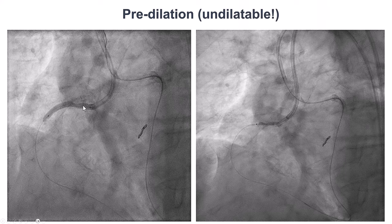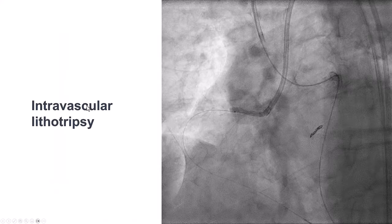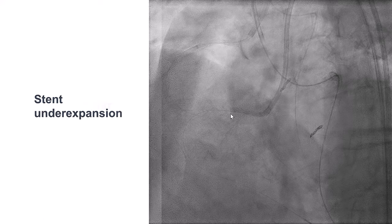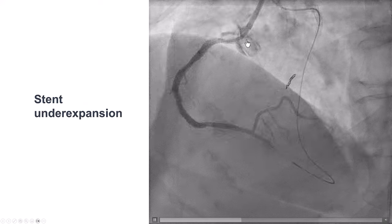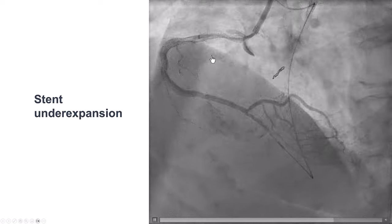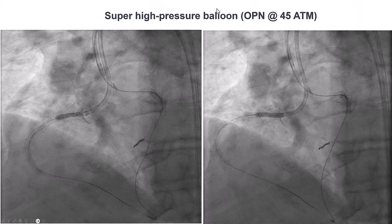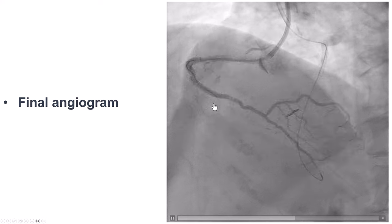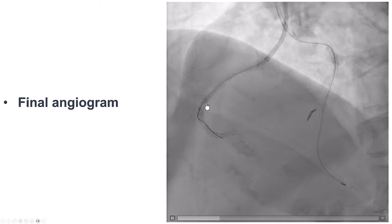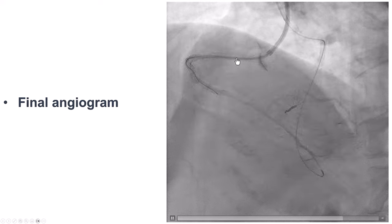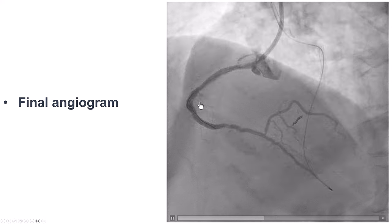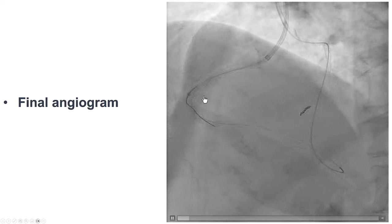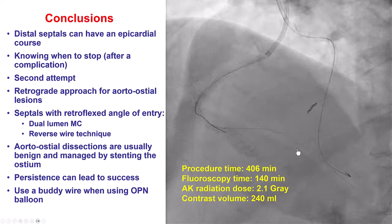The proximal RCA lesion was balloon undilatable, so we performed intravascular lithotripsy. Despite that, we still had some stent under-expansion and ended up using the OPN balloon up to 45 atmospheres. The balloon was placed over another wire, which was important because the balloon got stuck on the wire and we had to remove both at the same time. In the end, we got a nice result with TIMI flow into the right coronary artery.